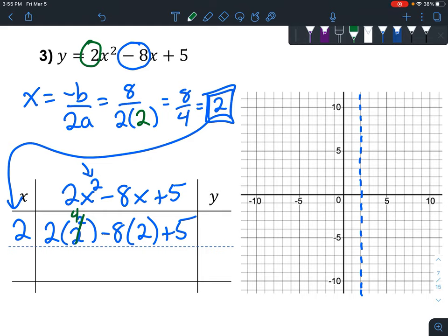and then think 2 times 4 is 8, and then do your other multiplication. So negative 8 times positive 2 is negative 16, and we still have a plus 5 right there at the end. 8 minus 16 is negative 8 plus 5, and then negative 8 plus 5 is negative 3.